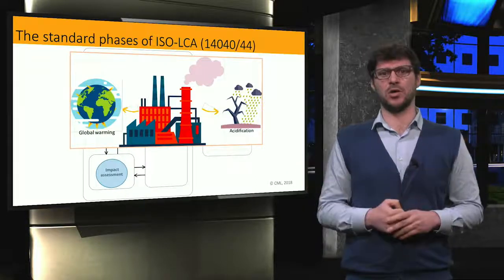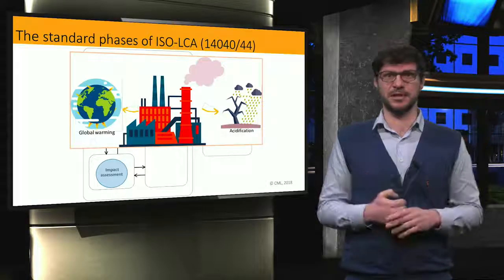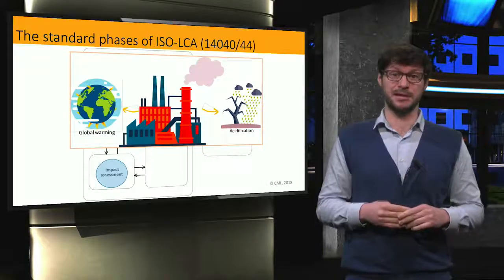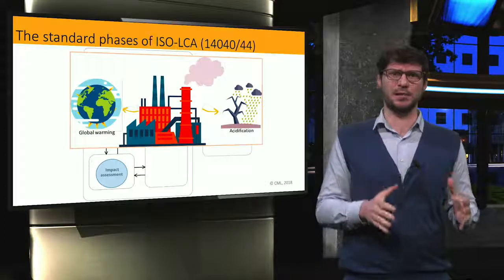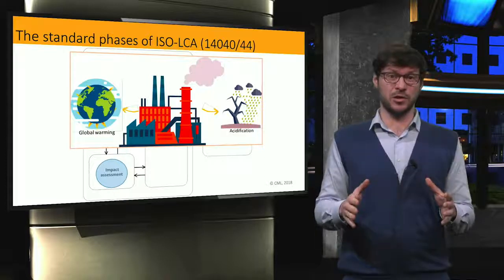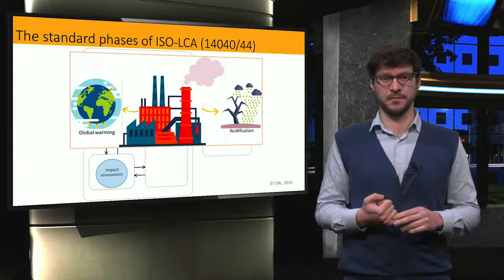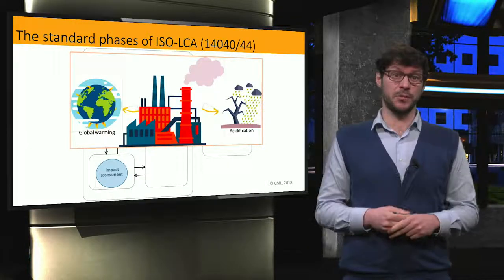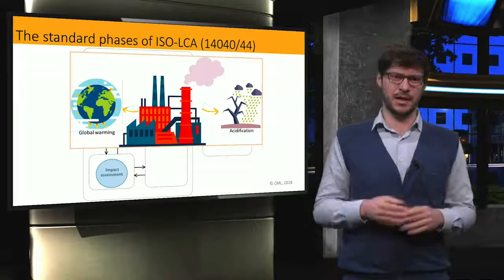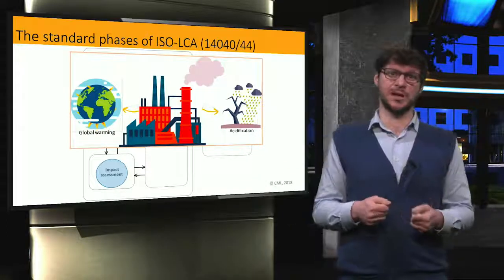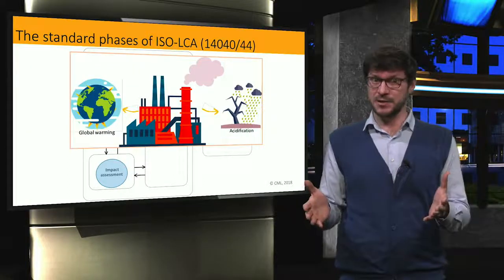Once the inventory problem is solved, the magnitude and significance of the potential environmental impacts of the systems under assessment can be evaluated during the lifecycle impact assessment phase. Impact scores are calculated using existing models that draw on the best available methods and scientific consensus to estimate transport, fate, effect, and potential damages of the inventory emissions. Standard LCA software will automatically connect the inventory data to the right characterization factors. Impact scores are then calculated across a spectrum of impact categories, which include global warming, toxicity, and acidification, among many others.